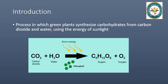We can say that photosynthesis is a process in which green plants synthesize carbohydrates from carbon dioxide and water using the energy of sunlight. These carbohydrates are made from carbon dioxide and water using sunlight energy.